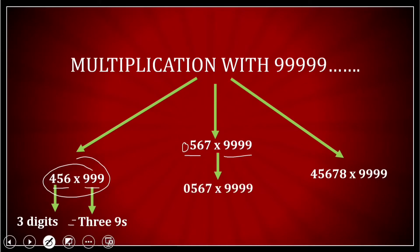like if I just change it to 0567 and 9999, that means the number of digits here comes out to be as 4 now and here also I have four 9s now. So that means again the number of digits in the first number is equal to the number of 9s in the second number.